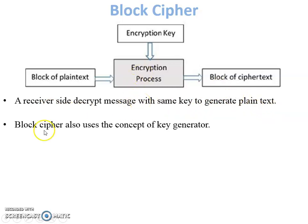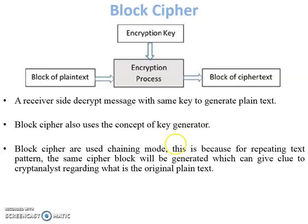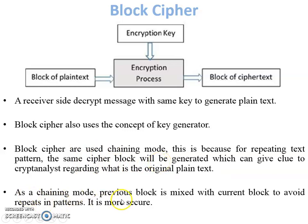Block cipher also uses the concept of a key generator to generate different sizes of key blocks. Block cipher uses chaining mode. The use of chaining mode is that when repeating text patterns occur, the same cipher block would be generated, which can give clues to the cryptanalyst about the original plain text. For example, if a block of plain text is ABC, it generates cipher text XYZ. If another block of ABC is given, another XYZ is generated — meaning a cryptanalyst could guess the plain text. So chaining mode is used: the previous block is mixed with the current block to avoid repeating patterns, making it more secure.